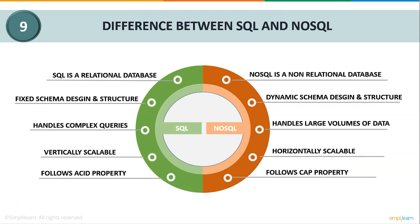SQL follows ACID properties: Atomicity — transactions are performed completely or not at all; Consistency — the database state remains consistent before and after a transaction; Isolation — transactions are independent of one another; and Durability — successful transactions are reflected even after a system failure. NoSQL follows CAP properties: Consistency, Availability, and Partition Tolerance.